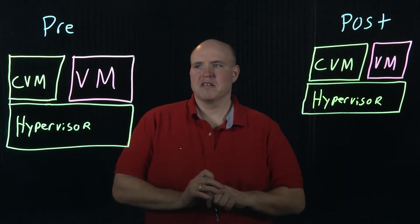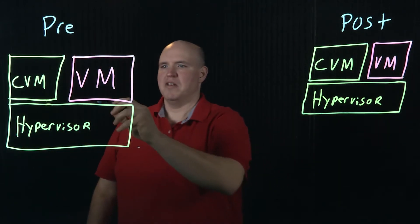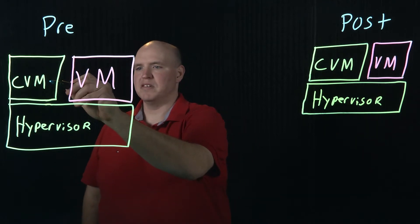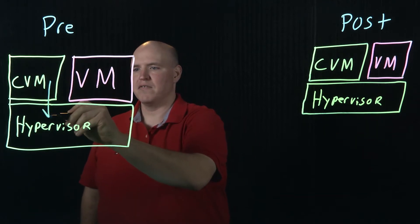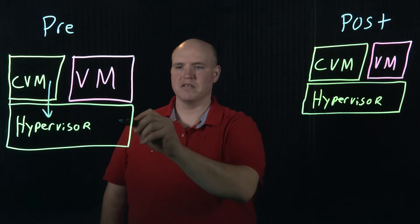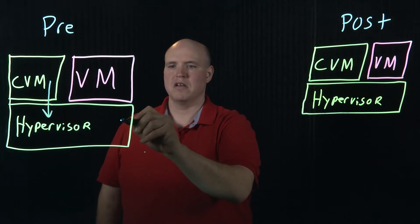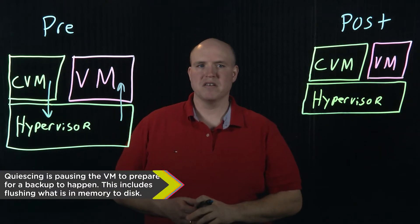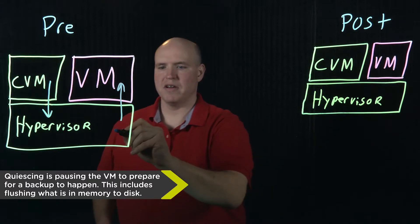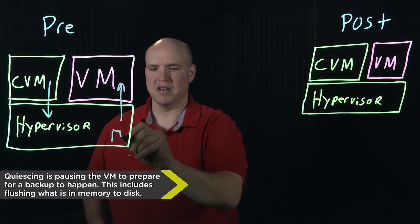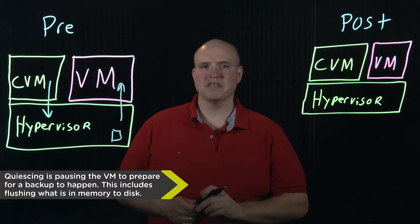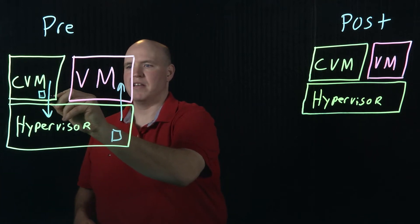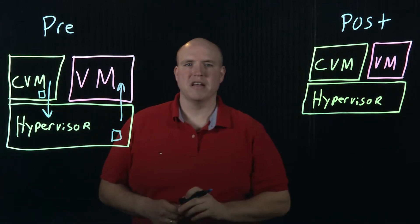Before 4.6, in order to take a Nutanix VSS Snapshot, we would send traffic from the CVM to the hypervisor, which would then cause a VM to take a hypervisor level snapshot. After this hypervisor level snapshot, we could then take a Nutanix level snapshot.